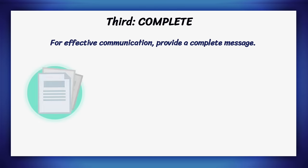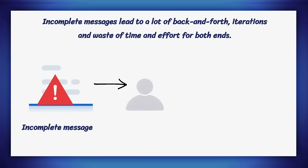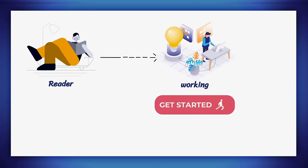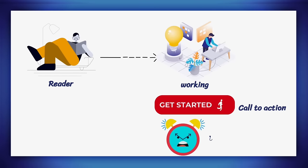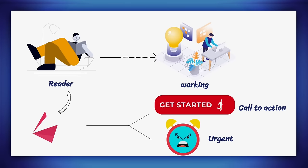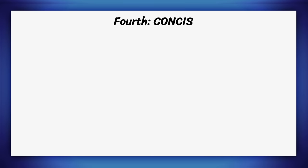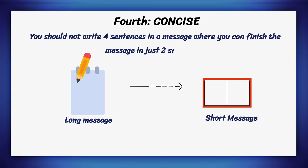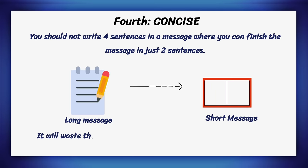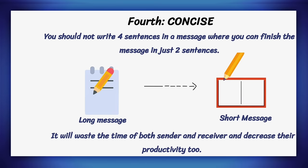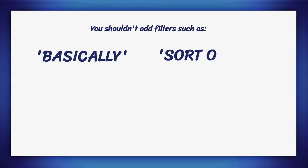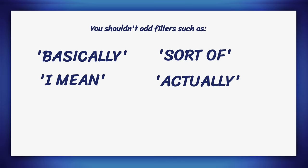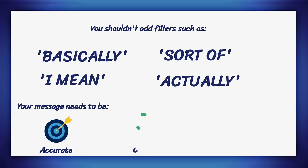Third, complete. For effective communication, provide a complete message. It will help the reader understand and take action. Incomplete messages lead to a lot of back and forths, iterations, and a waste of time and effort for both ends. If you want the reader to take action immediately, ensure that you have a call to action in your message and communicate the urgency of the task. Fourth, concise. You should not write four sentences when you can finish the message in just two. It wastes the time of both sender and receiver. You shouldn't add fillers such as basically, sort of, I mean, actually, etc. Remember, your message needs to be accurate, crisp, and to the point.